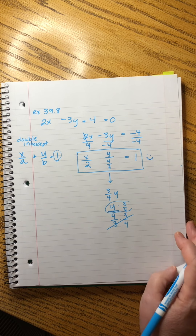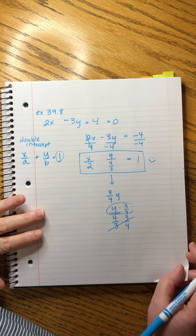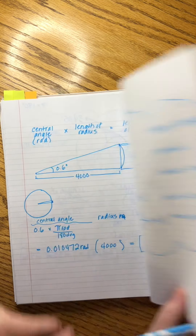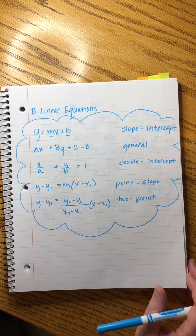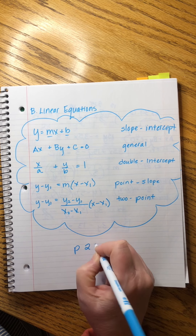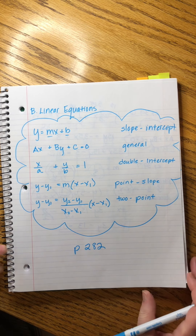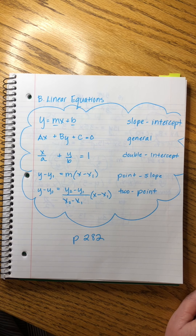That's Part B — playing around to change between the different forms. This chart of forms is on page 282, so mark it with a post-it flag. We're exhausted but we did it. Lesson 39 is history. Thank you, goodbye.